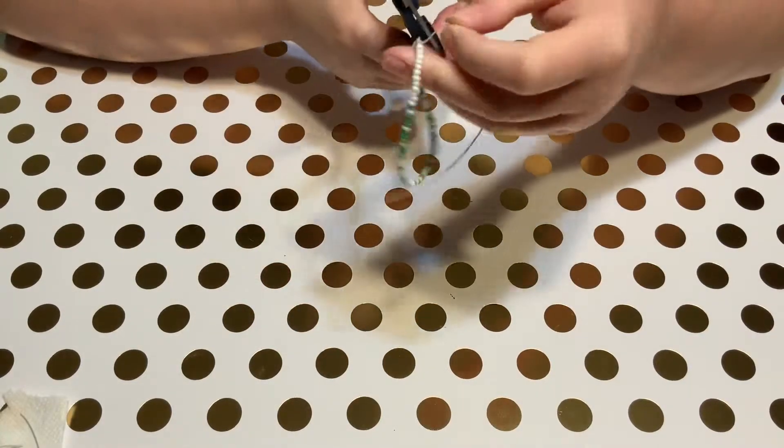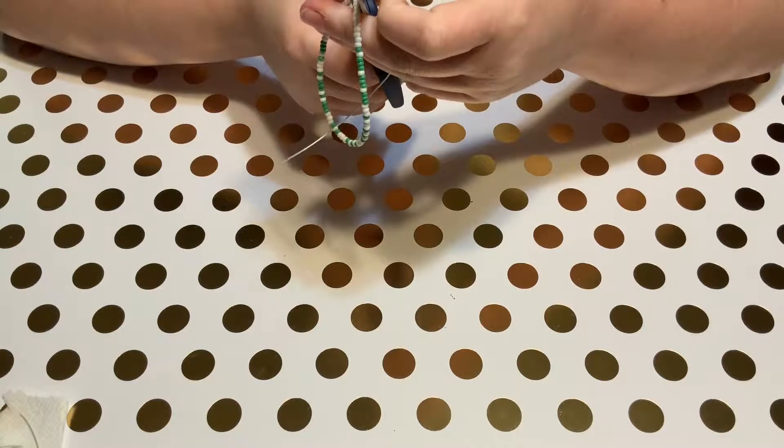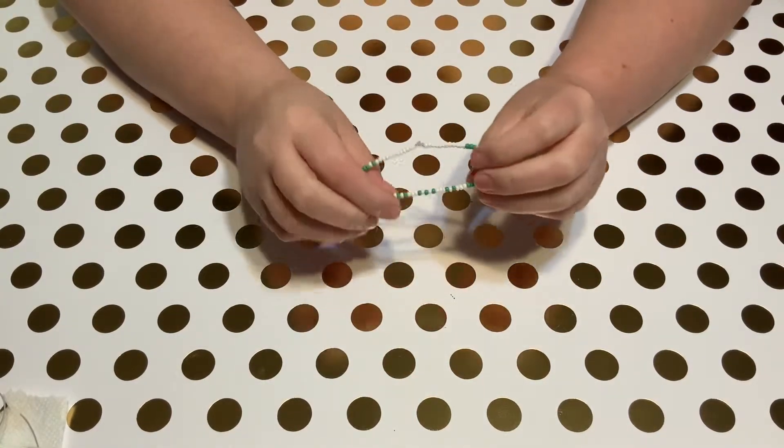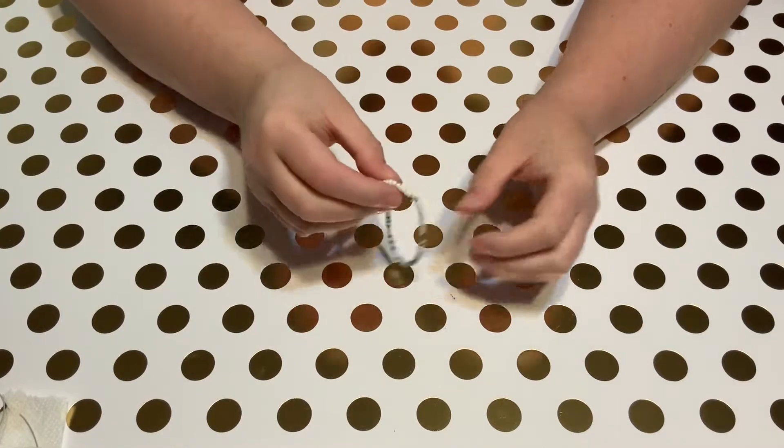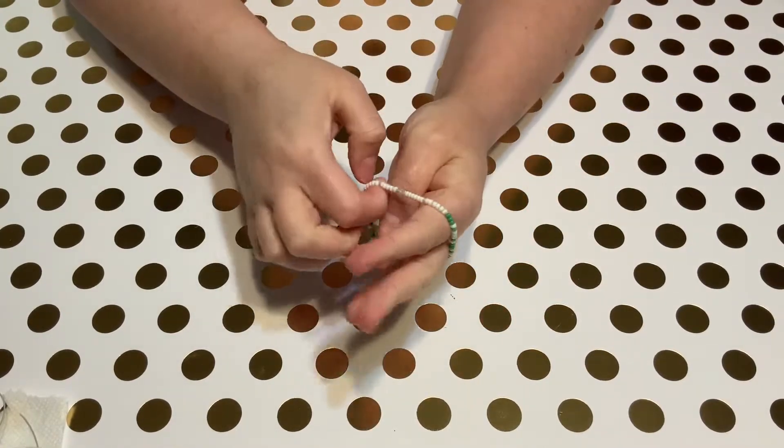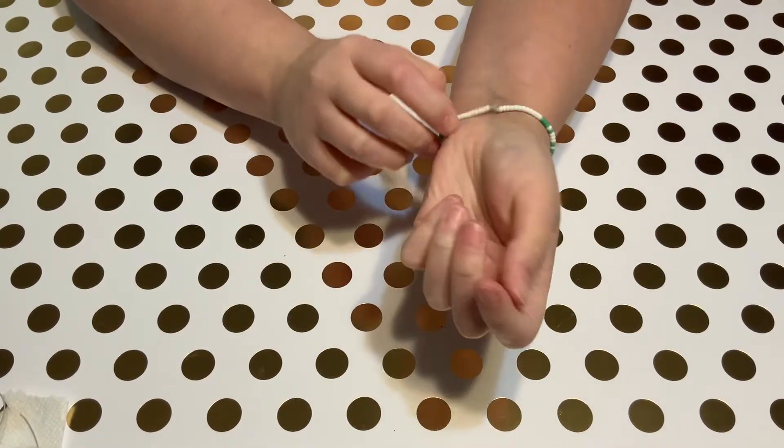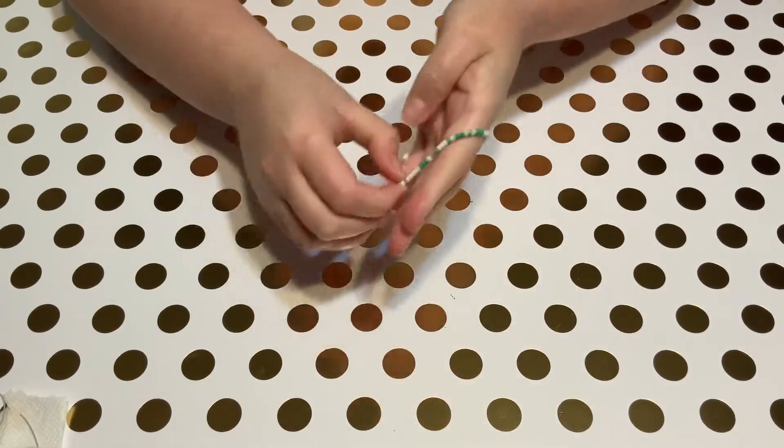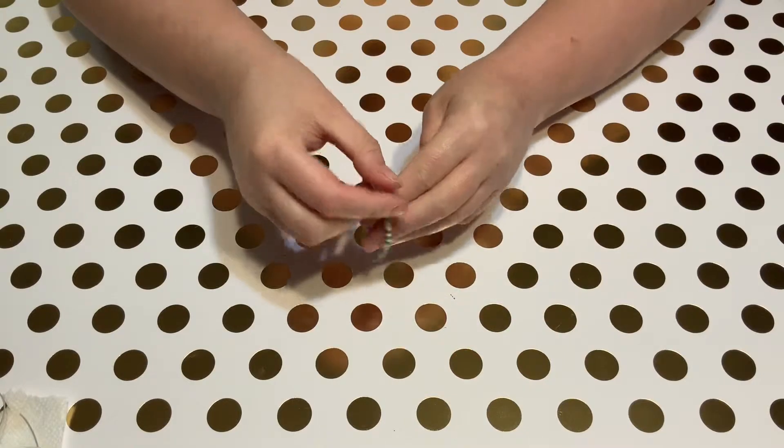The final step is to cut the excess cord from the end of my knot. And then I have my final bracelet with my name spelled out in Morse code. And it's stretchy. And now to try it on. And of course, I put it on backwards. So let's take that off and put it on correctly.